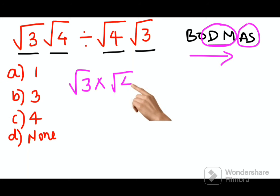So we have this is into root 4. Then we have a divide sign so root 4. Then we have a multiplication sign root 3.